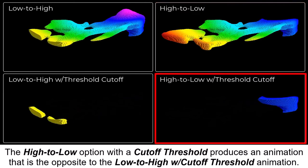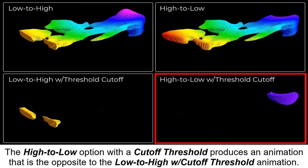The High-to-Low option with a cutoff threshold produces an animation that is the opposite to the Low-to-High with cutoff threshold animation.